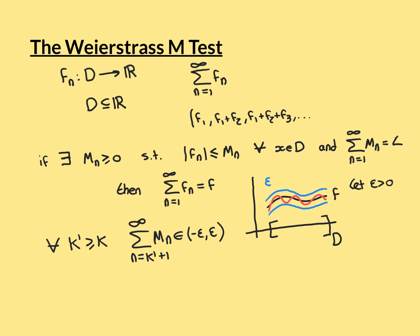Welcome back. I've erased quite a bit of our working, but by the end of the previous video, what we had concluded is that we had found a big K, which is a natural number, such that for all k prime greater than or equal to K, we can conclude that the sum from n equals k prime plus 1 to infinity of the m_n's has modulus less than epsilon, i.e. is an element of the interval from negative epsilon to epsilon. Now what we're going to do is claim that this K works for our uniform convergence criterion of our series of functions to our limit function f.